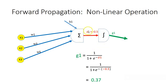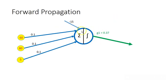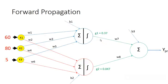With z1 = -0.5, we feed that into our sigmoid and get g1 = 0.37. We can do the same for the bottom node — using its weights, we get z2 = -3, and feeding that into the sigmoid gives g2 = 0.047.